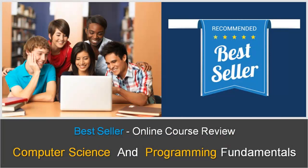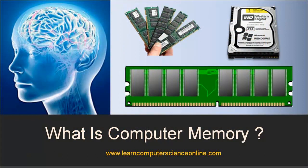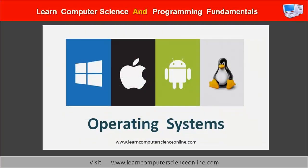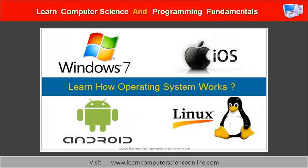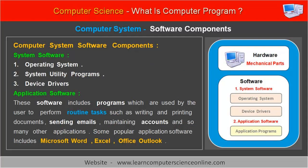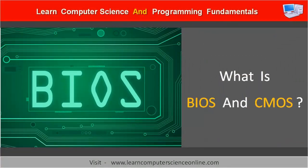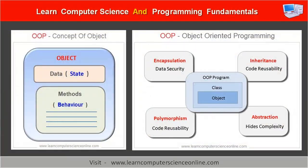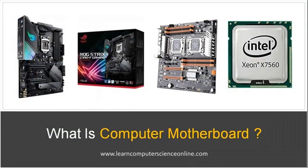This course also covers some of the most important topics such as the computer system memory unit, the memory hierarchy, different memory types, and computer memory organization. Further, it includes the operating system fundamentals, its types, and important functions of the operating systems. Application software and system software, the BIOS and CMOS battery functions, system booting process, various computer hardware components and their functions. The object-oriented programming (OOP) concepts, the motherboard architecture and computer bus system, and many more such important topics.